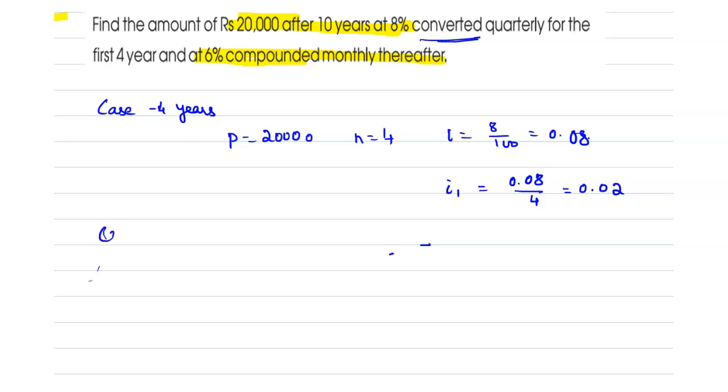So now for the second case, the second case we are considering for 6 years. So for this 6 years, n equal to 6 and the rate of interest is equal to 6% compounded monthly, which is equal to 6 by 100 multiplied by 12, so which is equal to 0.005.